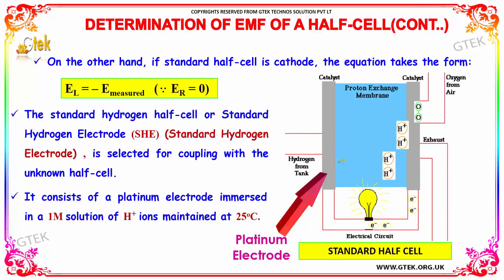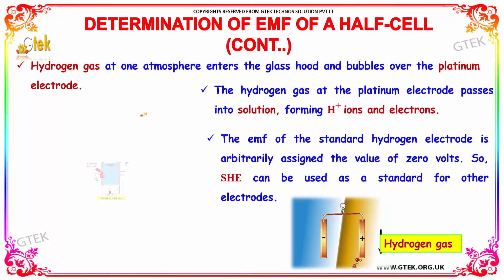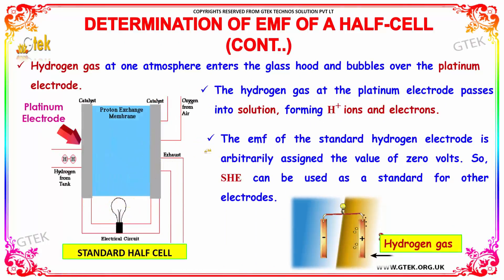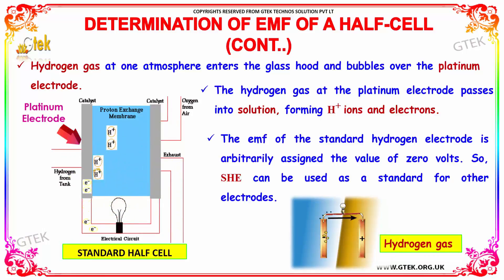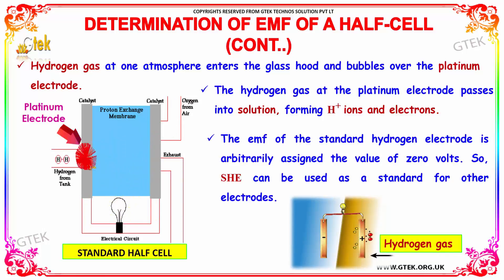Here you can see the platinum electrode. Hydrogen gas at 1 atmosphere enters the glass hood and bubbles over the platinum electrode. The hydrogen gas at the platinum electrode passes into solution forming H⁺ ions and electrons. The EMF of the standard hydrogen electrode is arbitrarily assigned the value of 0.